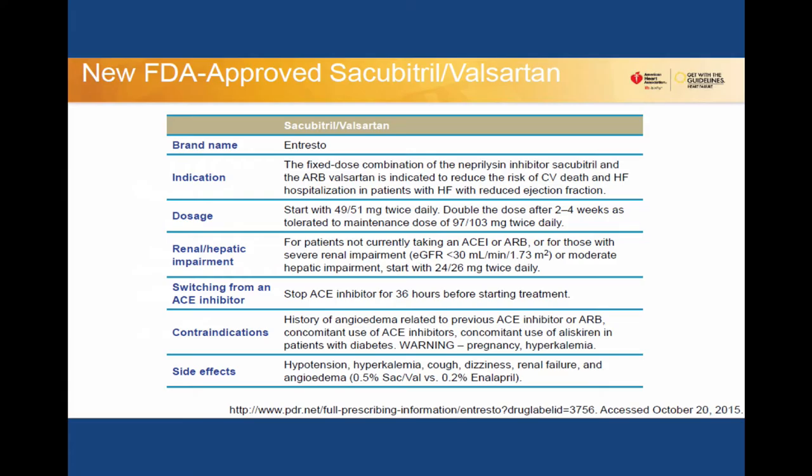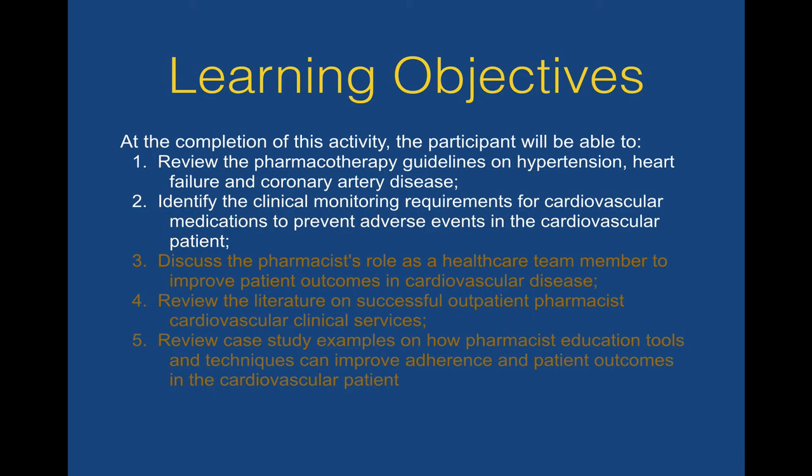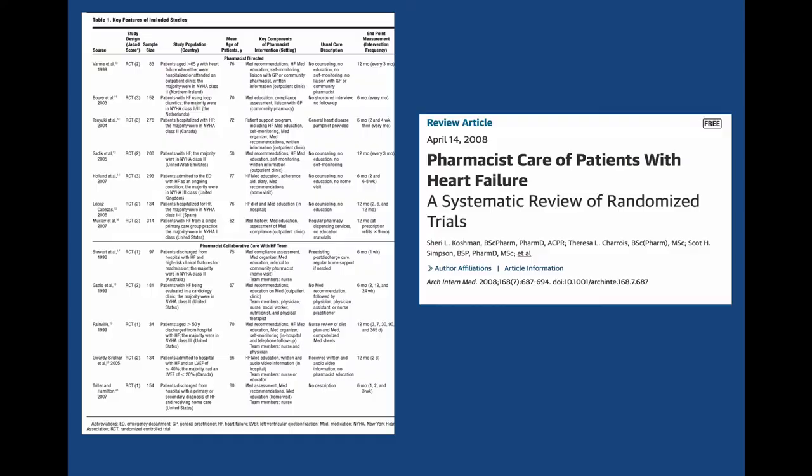The newer drug Entresto — sacubitril/valsartan — is the first fixed-dose combination of a neprilysin inhibitor and an ARB. It helps reduce the risk of cardiovascular death and heart failure hospitalization. Key thing to note: this is usually started in the hospital, because you do not start this drug without stopping the ACE inhibitor — the ACE inhibitor has to be stopped for 36 hours before starting treatment. Side effects include hypotension and hyperkalemia, which are the biggest reasons for stopping.